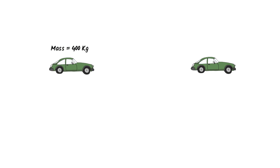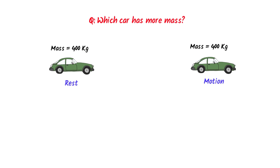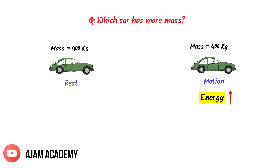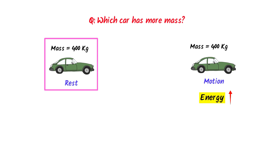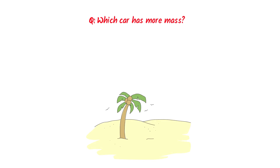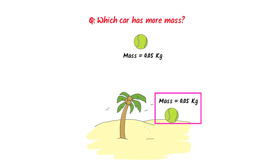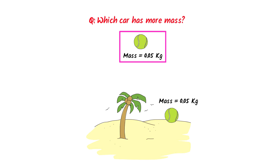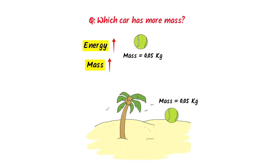For example, consider two identical cars, each with a mass of 400 kg. One car is stationary and the other is moving. Which car has more mass? The moving car possesses more kinetic energy and the stationary car possesses less kinetic energy. So comparatively, the moving car has more mass and the stationary car has less mass. Secondly, consider two identical balls, each having 0.5 kg mass. One ball is at the ground and the other is at a certain height above the ground. The ball above the ground has more potential energy, so comparatively it has more mass than the ball at the ground.